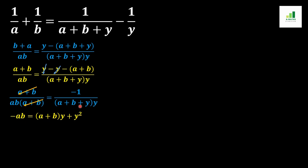First, (a+b) multiplies with 1 and we get -ab. Now (a+b+y) moves to the other side and multiplies, giving (a+b)·y when (a+b) multiplies with y, and y² when y multiplies with y. By cross multiplication we get (a+b)·y + y².